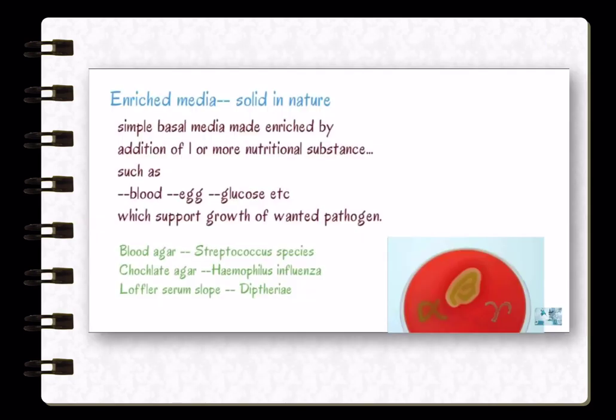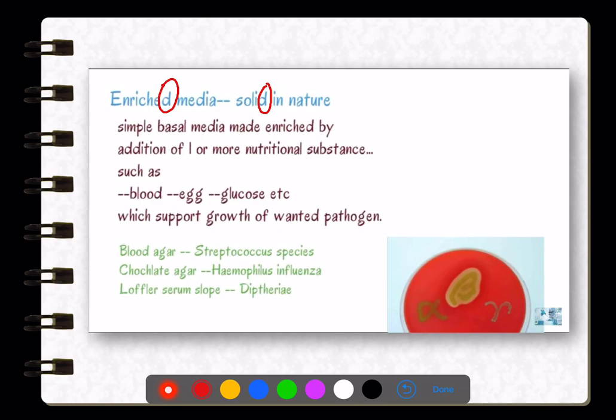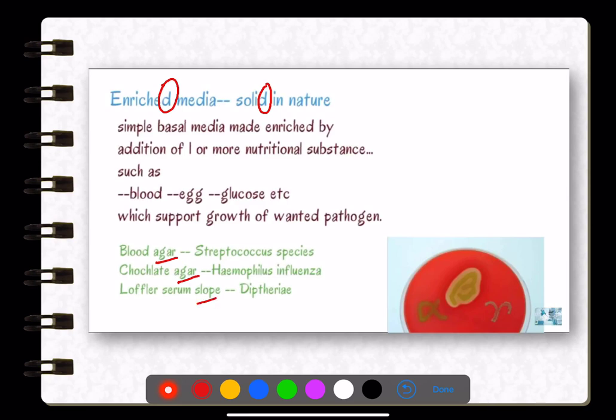Now we'll discuss complex media important for NEET exams. The first type is enriched media — remember the 'D' in enricheD stands for solid. Enriched media is solid in nature, so it contains agar. Examples are blood agar, chocolate agar, and Loeffler serum slope.